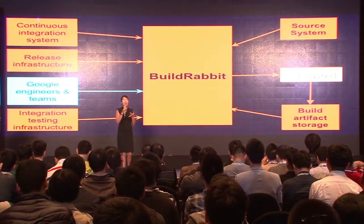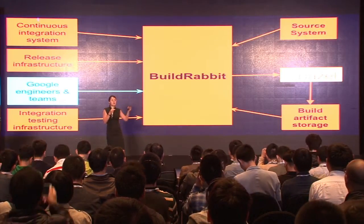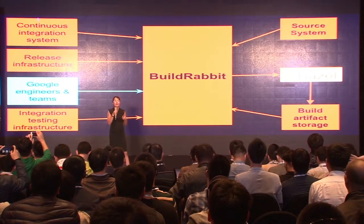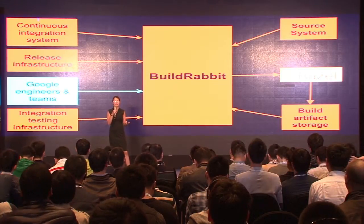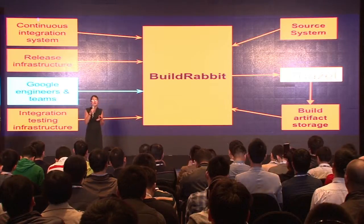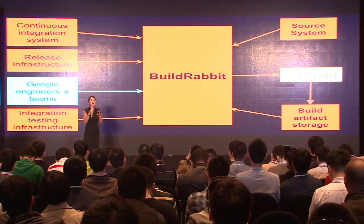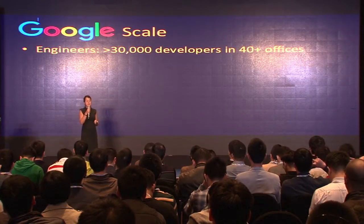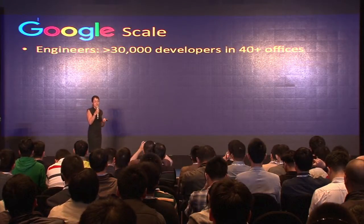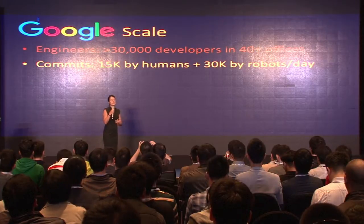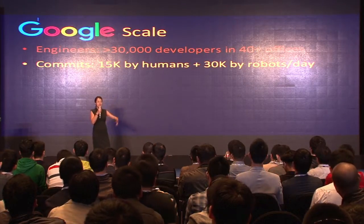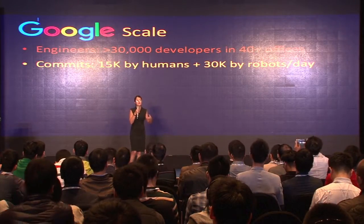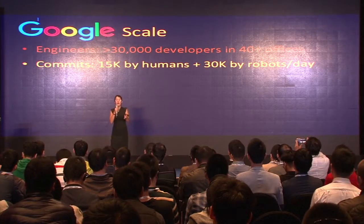BuildRabbit sits in the middle of the build and test stack, and because of the numerous people relying on it and the volume of requests, downtime is not an option for us. We can't ask our users to stop building, testing, and releasing their code just so we can turn down our system, swap in a new architecture, and bring it back. So we need to do zero downtime migrations. To give a better sense of the scale: 30,000 engineers in over 40 offices use the distributed build system, and 45,000 commits go through the system every day.